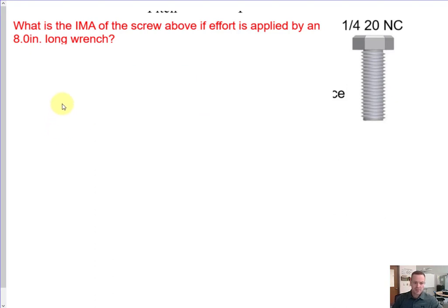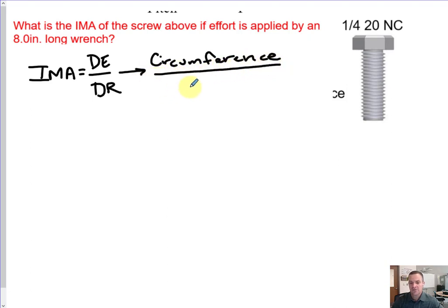Let's start with this problem. IMA is equal to DE over DR, but DE can be known as circumference. And distance to the resistance, the resistance is going to travel, is going to be pitch.